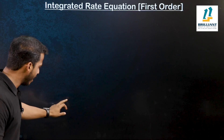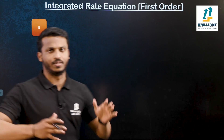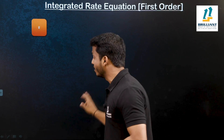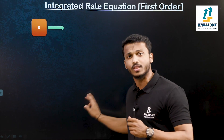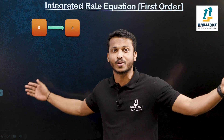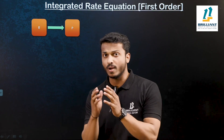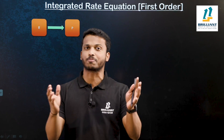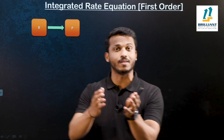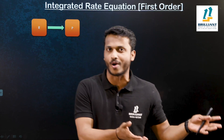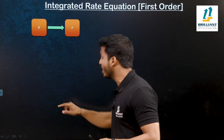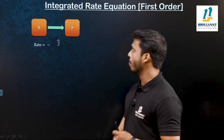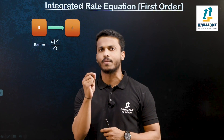Let's start from the basic. Let us consider a reactant. During a chemical reaction, the reactants are converted to products. Now let's write the rate of a reaction. You may know that the rate of a reaction can be expressed in different ways — either in terms of reactant or in terms of products. Let me write the rate of the reaction in terms of the reactant. That is minus dR divided by dt.